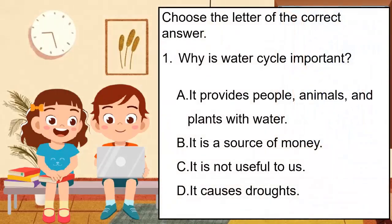Choose the letter of the correct answer. Why is the water cycle important? A. It provides people, animals, and plants with water. B. It is a source of money. C. It is not useful to us. D. It causes droughts. The correct answer is A.